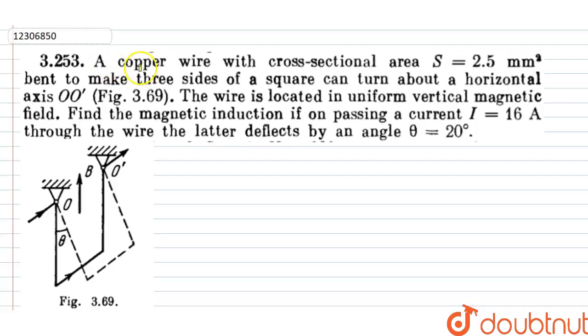The question given is a copper wire with cross-sectional area. How much is it? 2.5 mm square. It is bent to make three sides of a square.